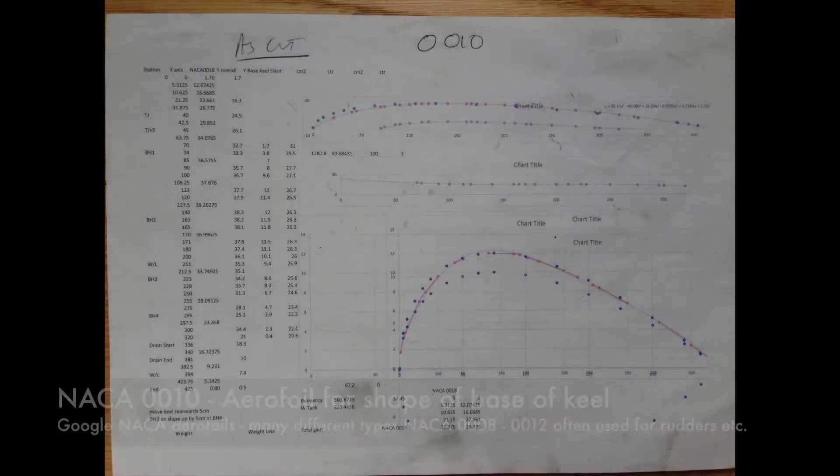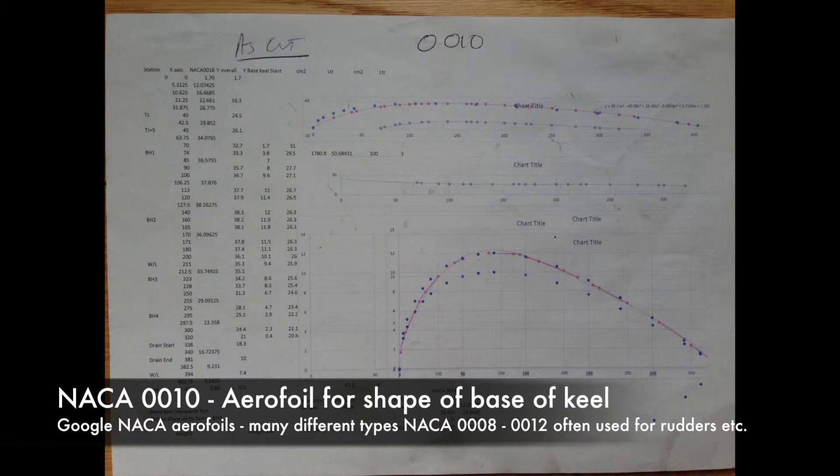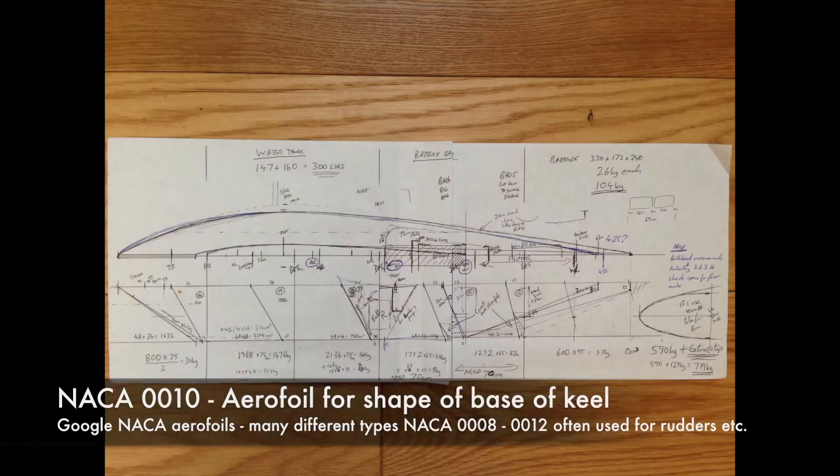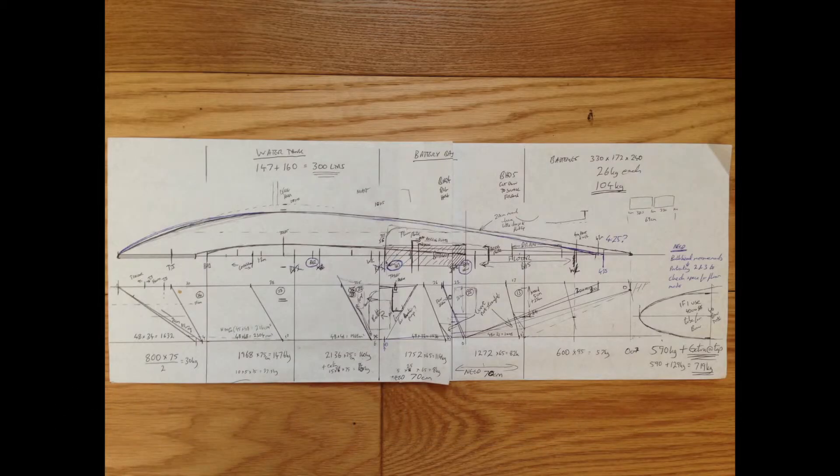Then I went online and searched for my NACA airfoil and got the various dimensions from that. So I plotted it into a Microsoft Excel spreadsheet and then you just take your measurement straight off the Excel spreadsheet and plot it straight onto the steel. So I finalized that whole design and ordered my steel and then it came time to actually start the work.